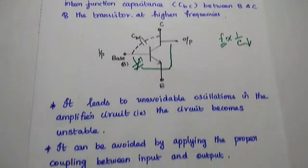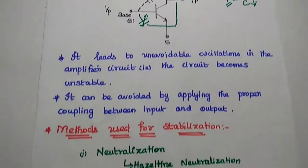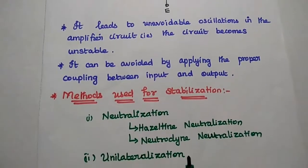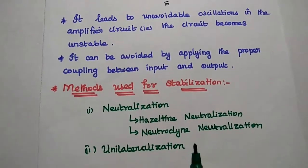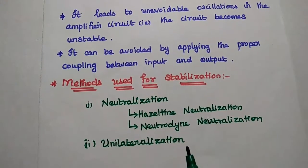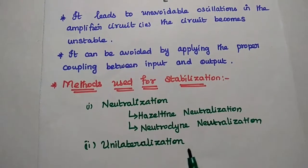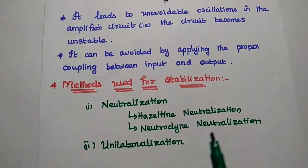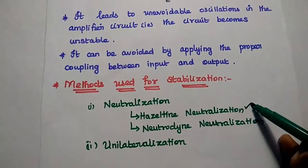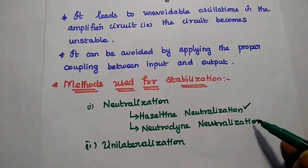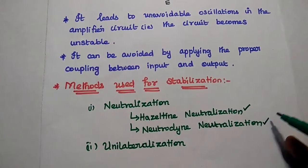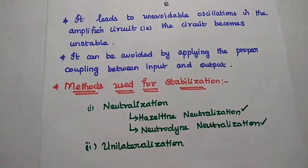That is called the stabilization method. The methods used for stabilization are: neutralization methods, unilateralization, and mismatch. In this video, we are going to discuss Hazeldyne neutralization and neutrodyne neutralization.